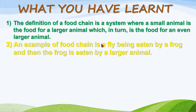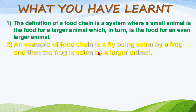An example of a food chain is a fly being eaten by a frog, and then the frog being eaten by a larger animal. The fly is a small animal, the frog is a larger animal. The fly is eaten by the frog, and then the frog is eaten by an even larger animal — for example a hawk, eagle, or snake.